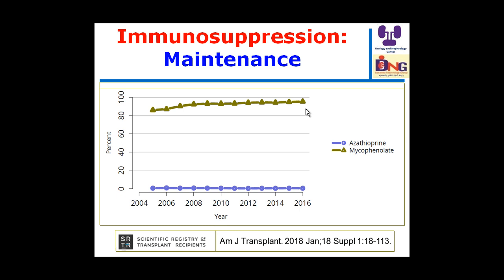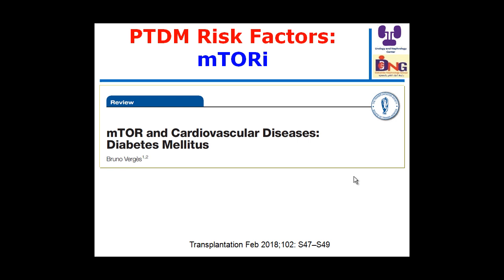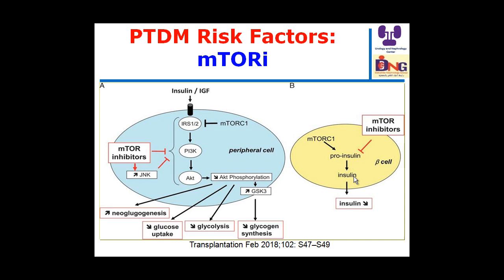Regarding calcineurin inhibitors, cyclosporine is being replaced by tacrolimus in maintenance therapy. mTOR inhibitors replaced azathioprine in the early 2000s but current use is less than 5% at one year. mTOR inhibitors affect beta cells by suppressing pro-insulin, reducing insulin release, and affect peripheral cells by interfering with insulin signaling — specifically insulin receptor substrate-1 — increasing gluconeogenesis, decreasing glucose uptake and glycolysis, and decreasing glycogen synthesis.